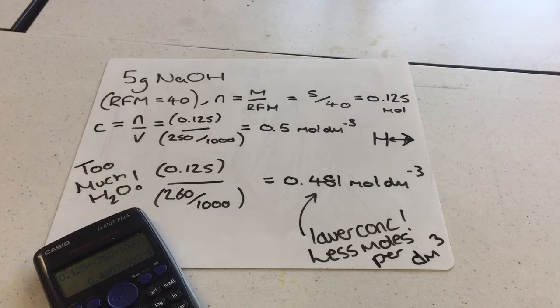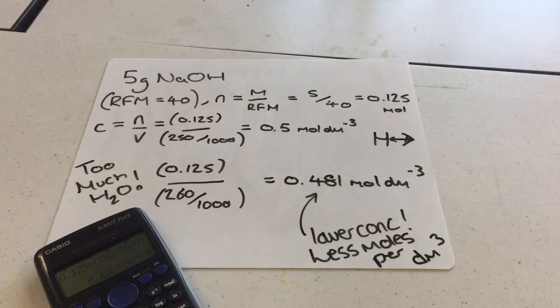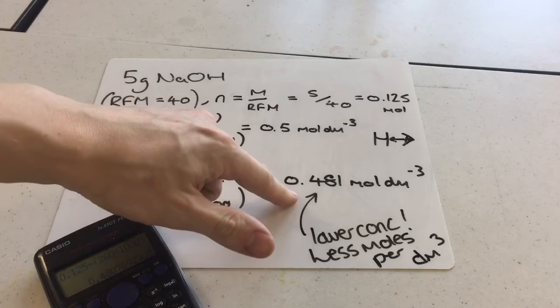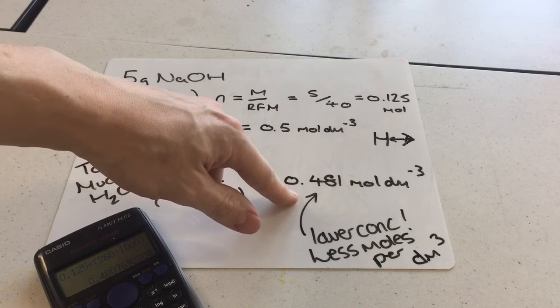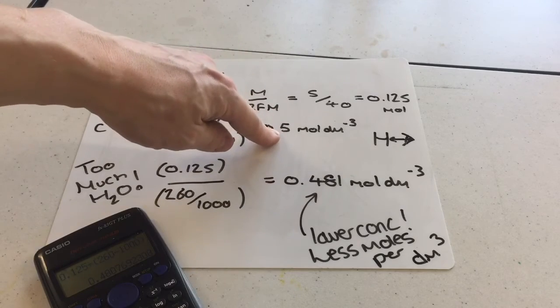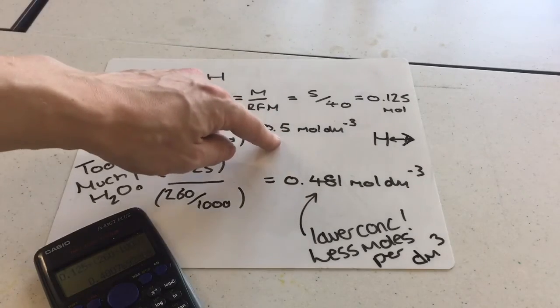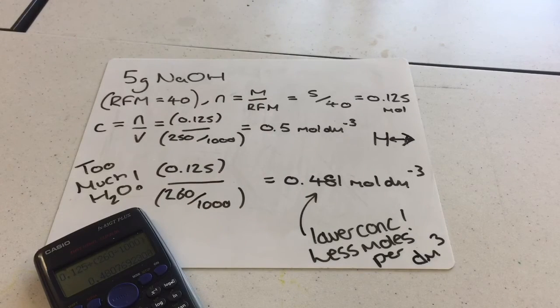Which means if I was to do these two solutions in a titration against the same amount of HCl, this one would require less HCl to reach the end point, whereas this one would require more because it's physically got more moles of reactant per unit of volume.